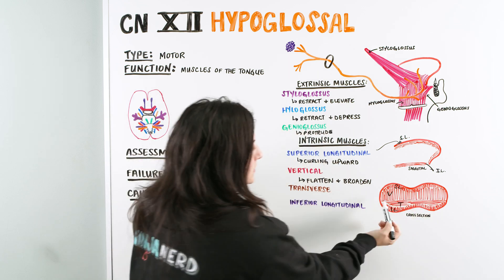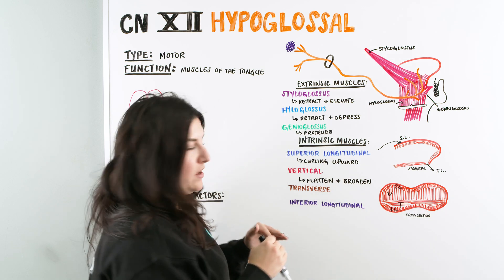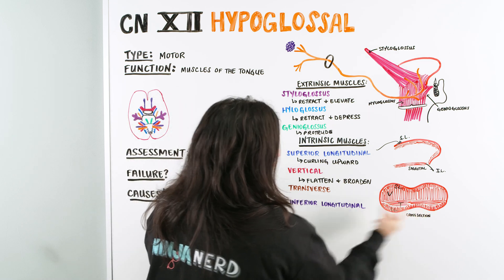So the transverse is this muscle here. What this is going to allow to do, it's going to allow to elongate and also narrow the tongue, right? So where we contract, it's going to narrow it.